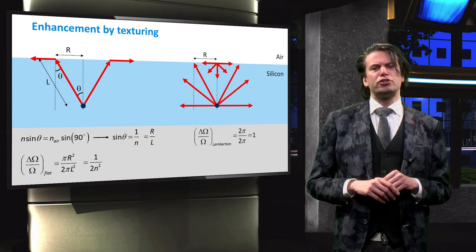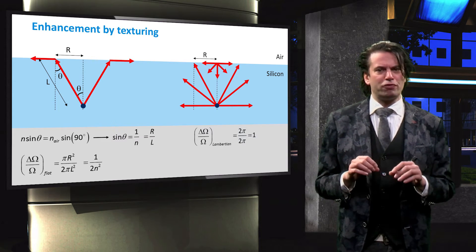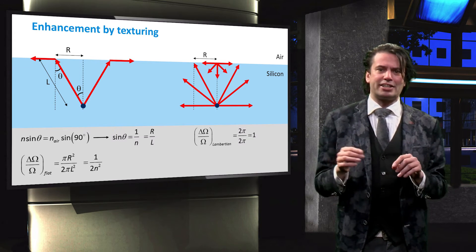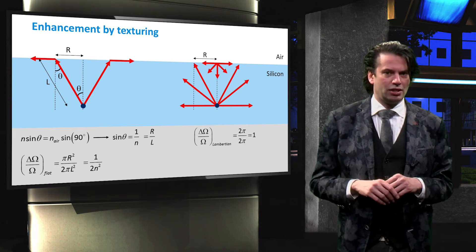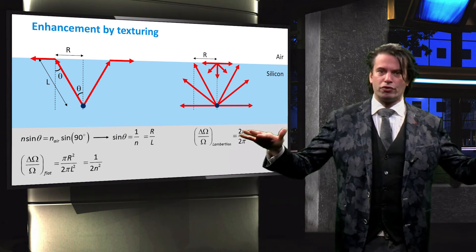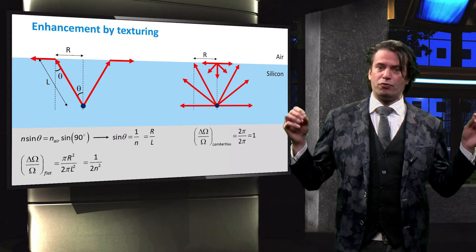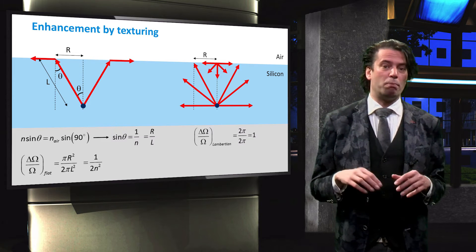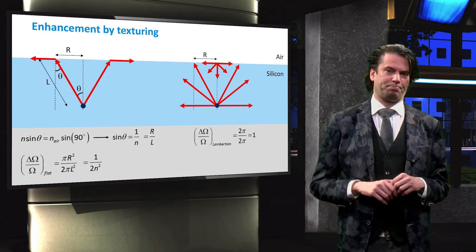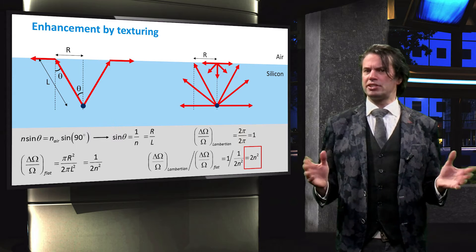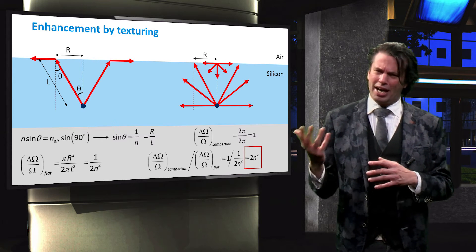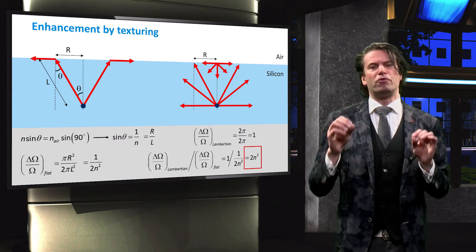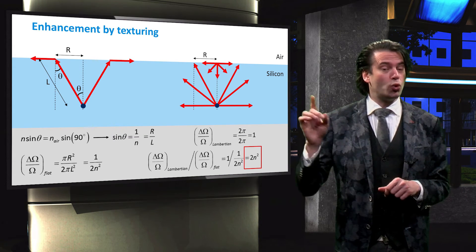Now we introduce front surface texturing. We assume the front surface to be a Lambertian scatter, which means that the light is scattered evenly in every direction. All light incident on the front of the absorber layer can reach a point in the bulk. Delta omega and omega are therefore both equal to 2 pi. The absorption enhancement can be defined by comparing the light trapping of a Lambertian surface to that of a flat surface. This yields a performance enhancement of 2N squared.